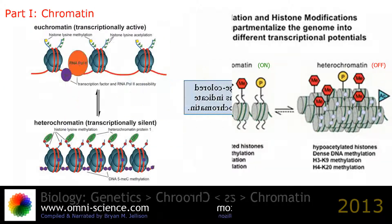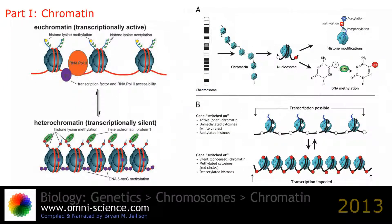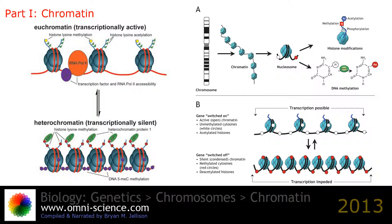Epigenetic chemical modification of the structural proteins in chromatin also alter the local chromatin structure, in particular chemical modifications of histone proteins by methylation and acetylation.